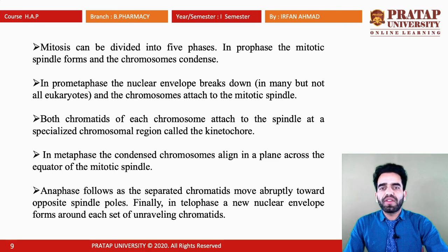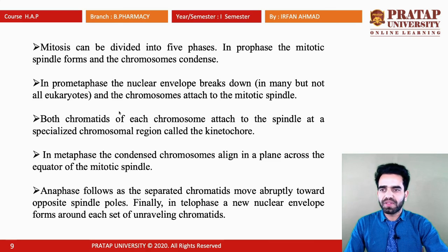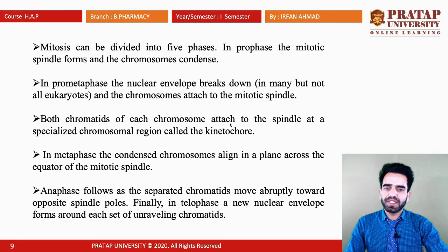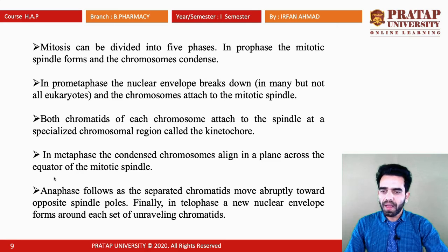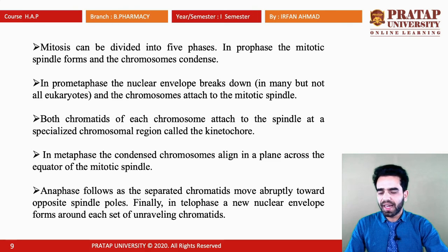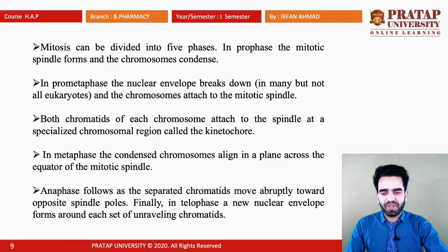Mitosis can be divided into five phases. In prophase, the mitotic spindle forms and the chromosomes condense. In prometaphase, the nuclear envelope breaks down and chromosomes attach to the mitotic spindle; both chromatids of each chromosome attach to the spindle at a specialized chromosomal region called the kinetochore. In metaphase, condensed chromosomes align across the equator of the mitotic spindle. In anaphase, separated chromatids move abruptly towards opposite spindle poles. Finally, in telophase, a new nuclear envelope forms around each set of chromatids.